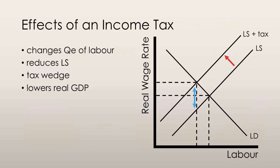Supply-side economists believe that a tax on personal income changes potential GDP and aggregate supply. This results in a change of the full employment quantity of labor to a lower point of real GDP. Because people are being taxed more, their incentive to work decreases. This is shown as a leftward shift of the labor supply curve.